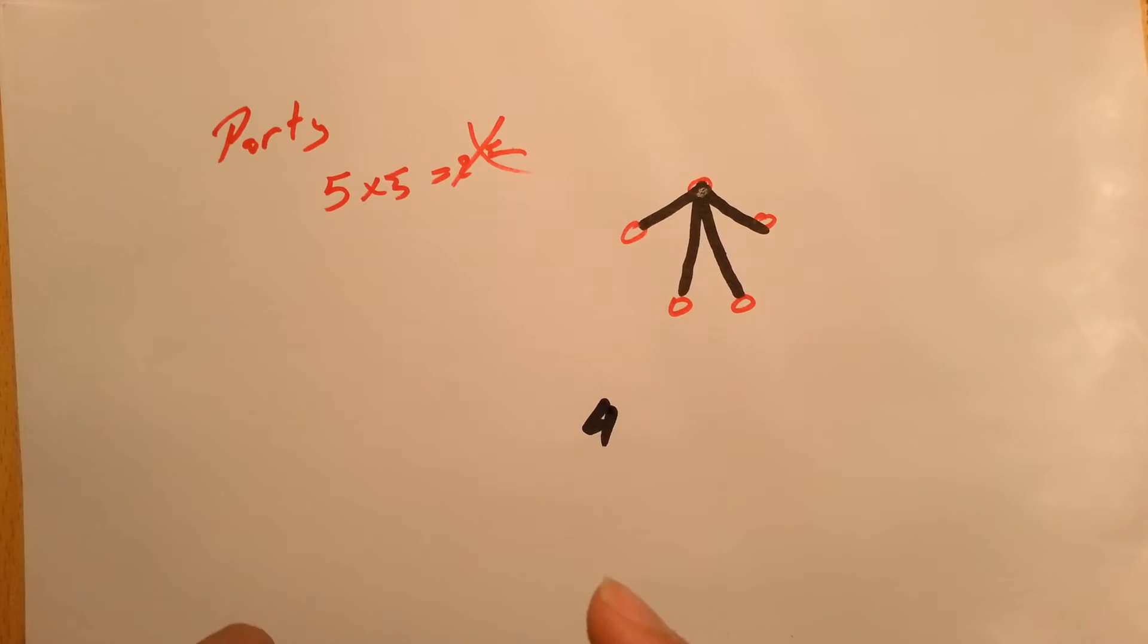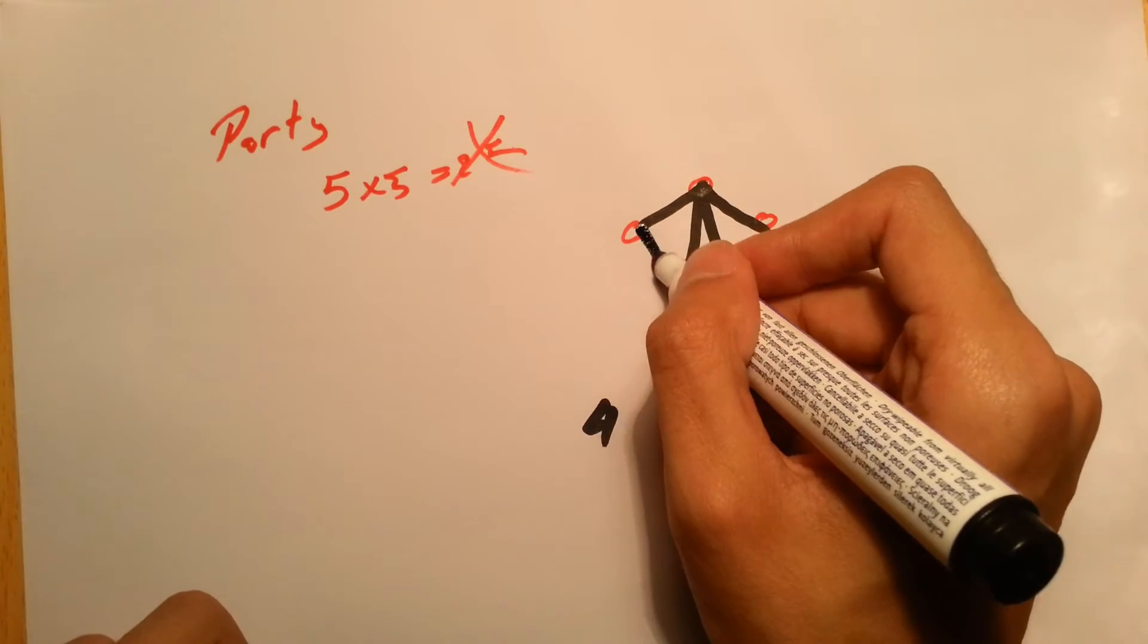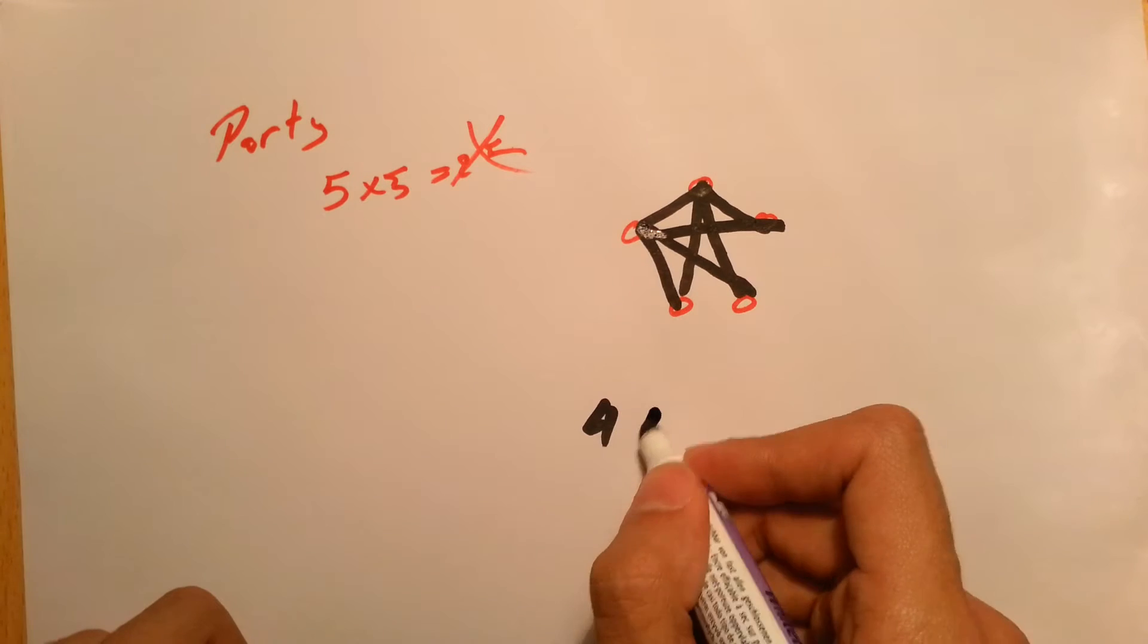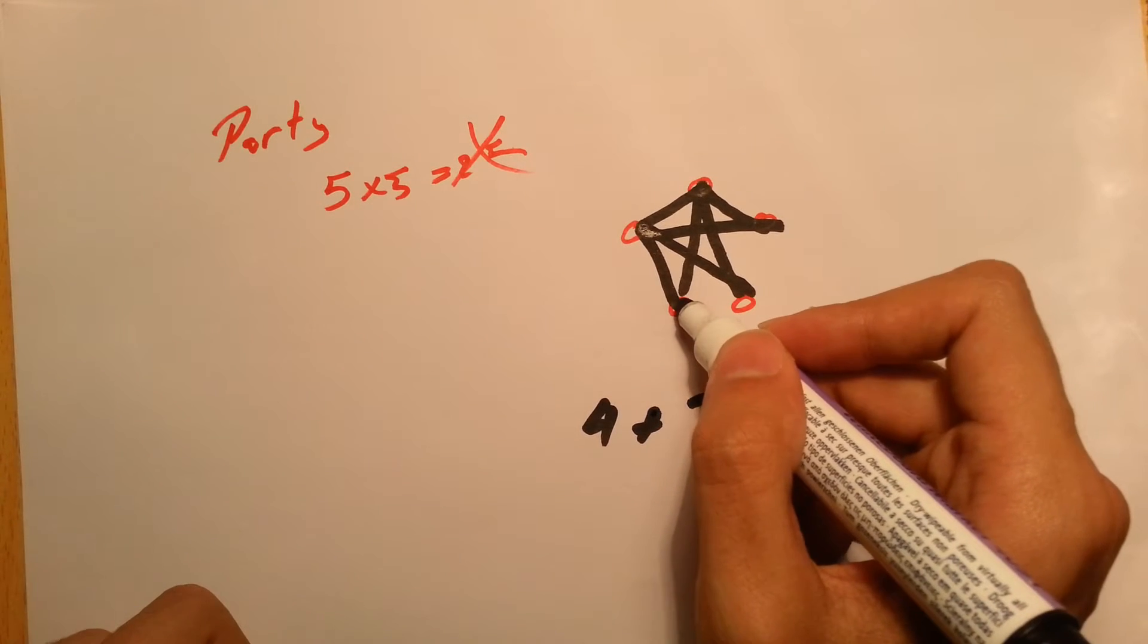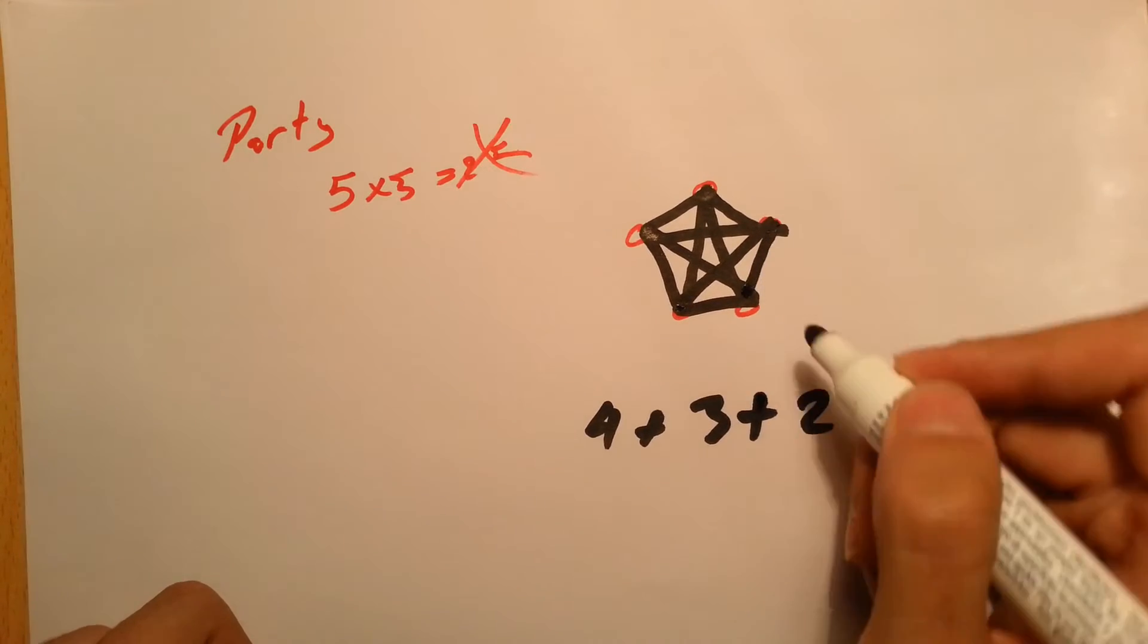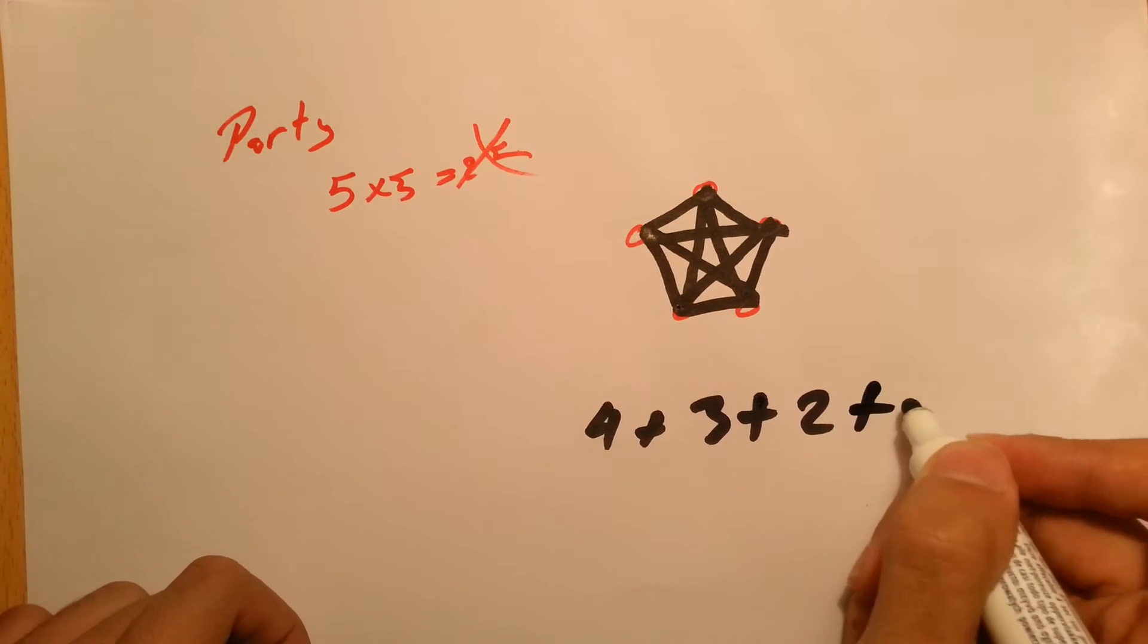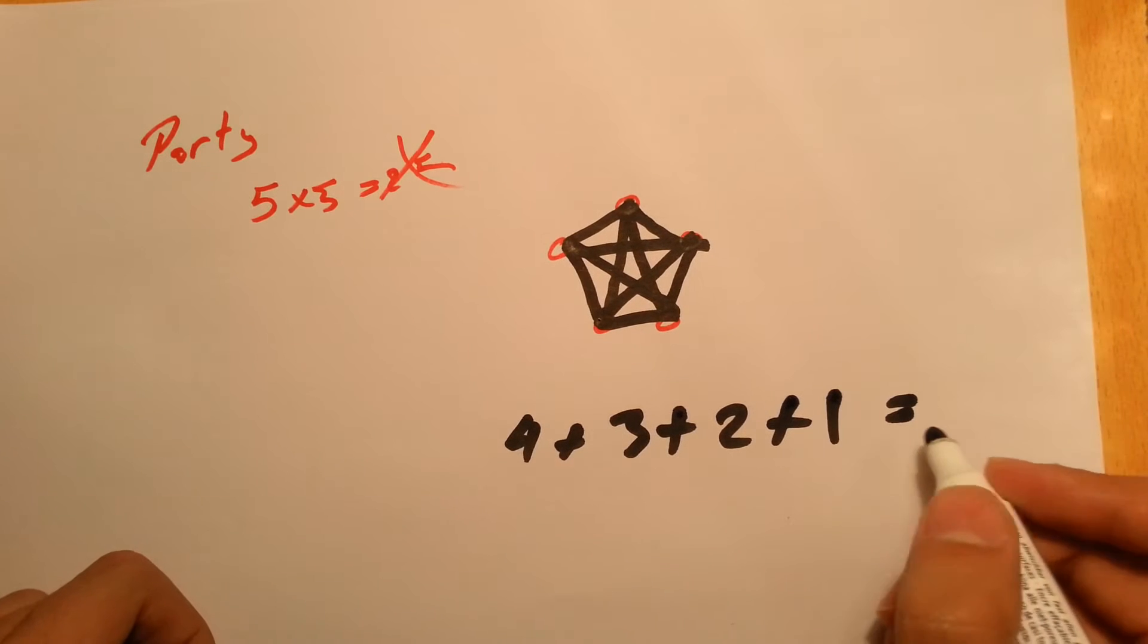The second one will not handshake this one again. He's already handshaken him. So this one, two, and three. So it's plus three. The third one will have two more handshakes with this one, this one. And the last one will only handshake this one. The last one's already greeted everyone in this party. So the total is four plus three plus two plus one which is ten.